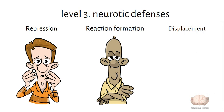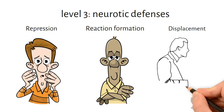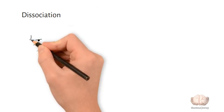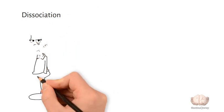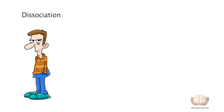Displacement: redirecting emotions from an original source to a safer substitute target. For example, getting angry at a spouse when actually upset with your boss. Dissociation: disconnecting from emotions, memories, or external realities that are too overwhelming. For example, feeling detached or disconnected after a traumatic event.